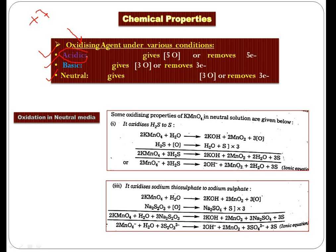When you check the oxidizing property in acidic medium, it gives five oxygen atoms, and it removes five electrons from the substrate. Removal of electrons is oxidation. But if you check in basic and neutral media, its oxidation property is less than in acidic. So it gives three oxygen atoms in both and removes three electrons from the substrate.